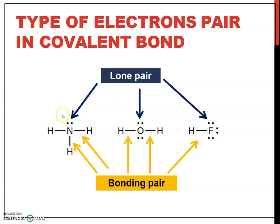A lone pair means a pair of valence electrons that are not shared. A bonding pair is a pair of electrons that are being shared by two atoms.